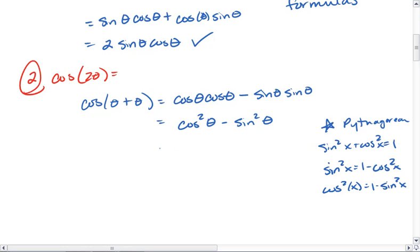So this could also be rewritten as cosine squared minus, substitute 1 minus cosine squared for sine squared, which becomes 2 cosine squared theta minus 1. So here's option 1.